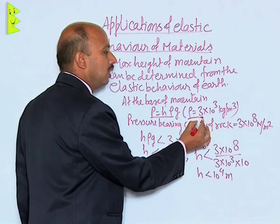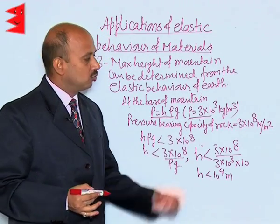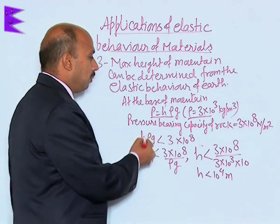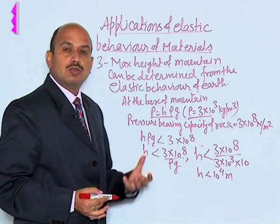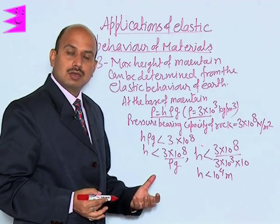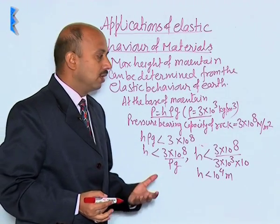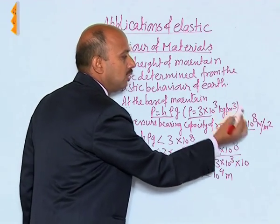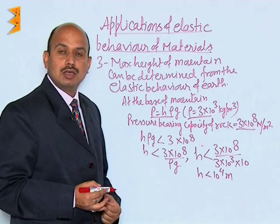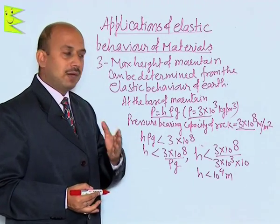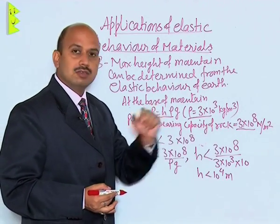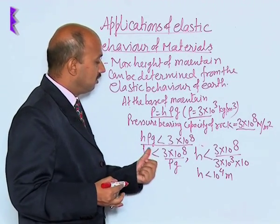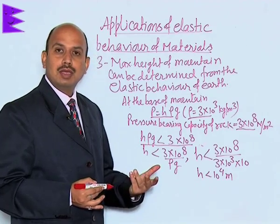The density of the material in the mountain is given as 3 × 10³ kg/m³. The pressure-bearing capacity of the rocks below the mountain is 3 × 10⁸ N/m². Obviously, the pressure applied by the mountain should be less than this, so H·ρ·g must be less than or equal to 3 × 10⁸.